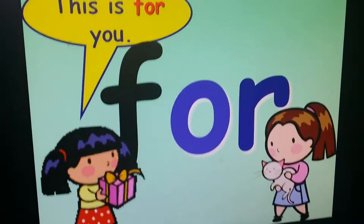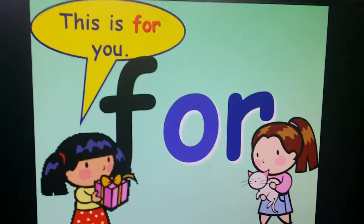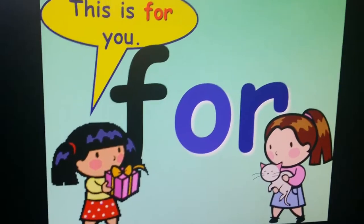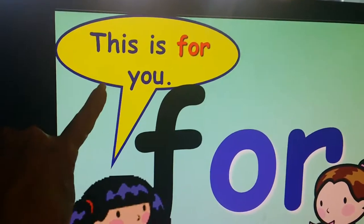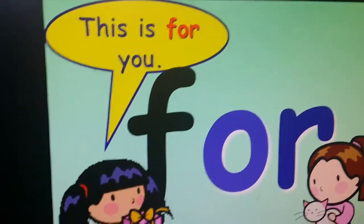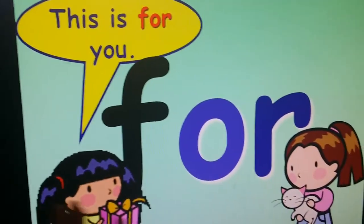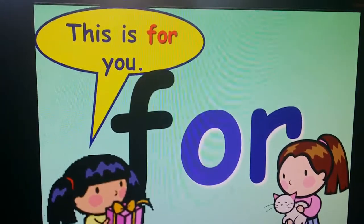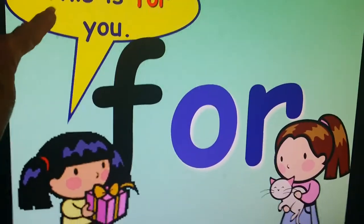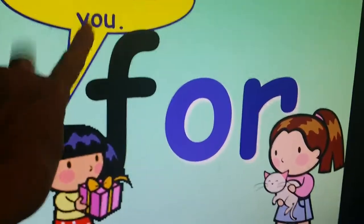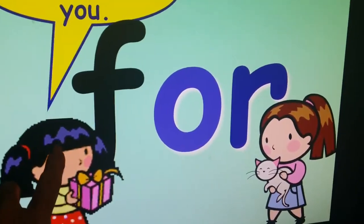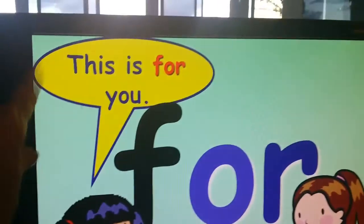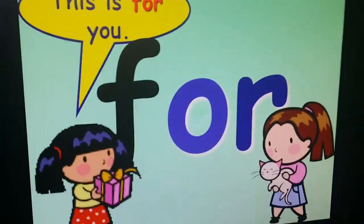FOR. She's saying this is FOR YOU and she's giving her little friend. This is called a speech bubble. Sometimes in books they will have the words 'the girl said, this is FOR you,' but sometimes the speech bubble puts the words of what she said, and who the bubble points to is always the one who's talking. That's called a speech bubble, just for you to know. FOR.